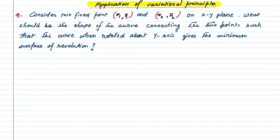Hello friends, today we are going to solve another problem. It is an application of the variational principle. Consider two fixed points x1, y1 and x2, y2 on the xy plane. What should be the shape of the curve connecting these two points such that the curve, when rotated about the y-axis, gives the minimum surface area of revolution?